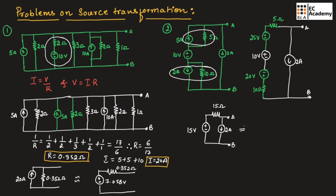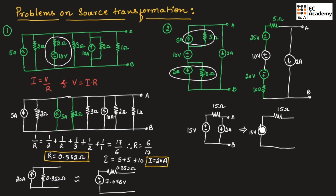We know any element connected in parallel with a voltage source can be neglected, so we can write the voltage source with the 15 ohm resistor in series and neglect the current source. Now this voltage source can be converted into a current source by dividing 15 volts by 15 ohms, which gives 1 ampere.